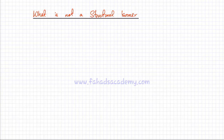One very important question when you are drawing isomers is that you must always know what is not a structural isomer. There are three things that, if present, would not make two molecules isomers of each other.